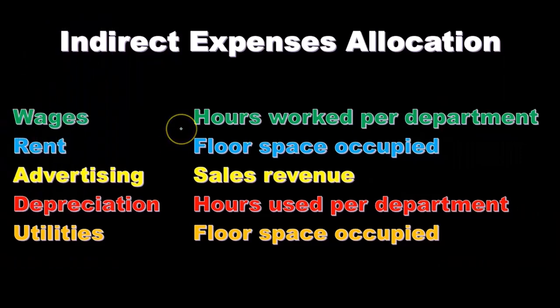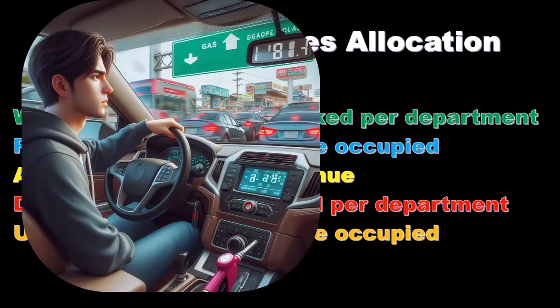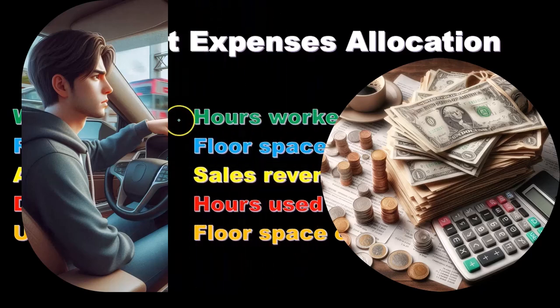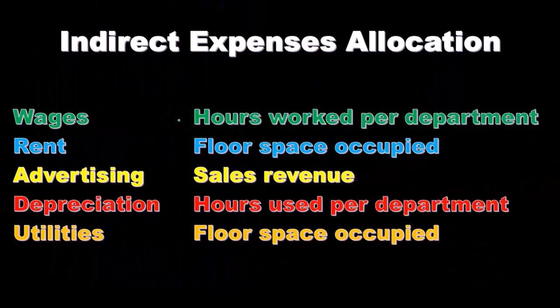Here we have some type of activity base that's related to a cost driver driving the cost. We can quantify this activity base and then compare departments so that we can have a ratio analysis comparing the relative use of the activity base from department to department compared to the total, resulting in ratios or percentages that add up to a hundred, which we can then apply the costs based on.